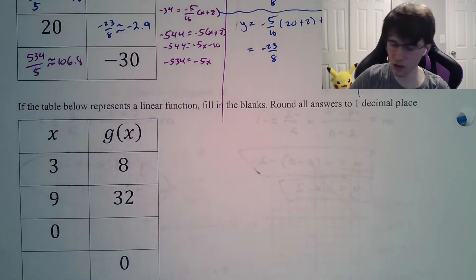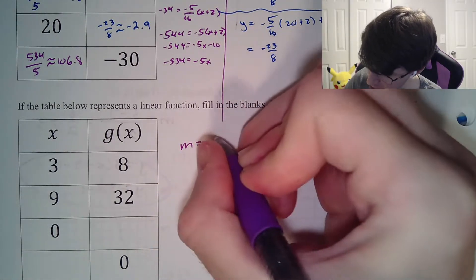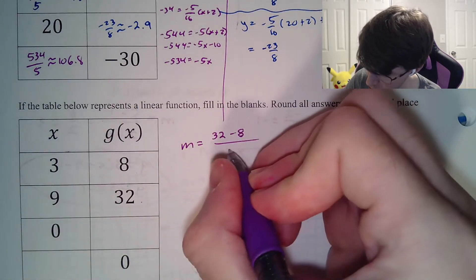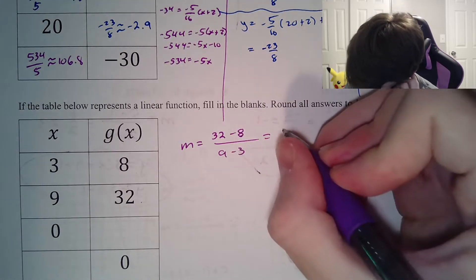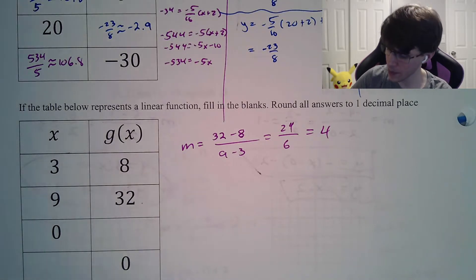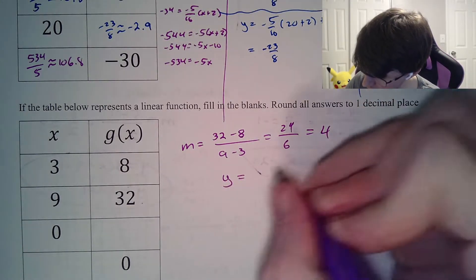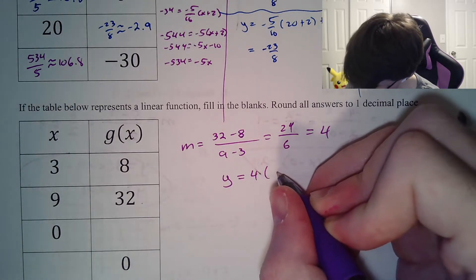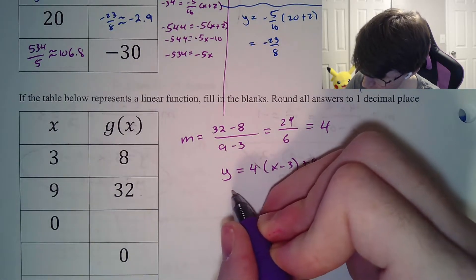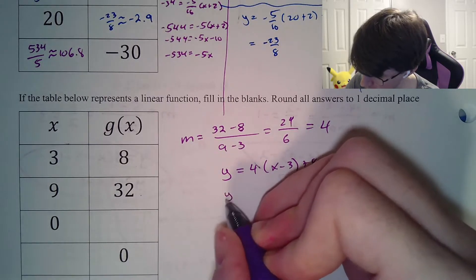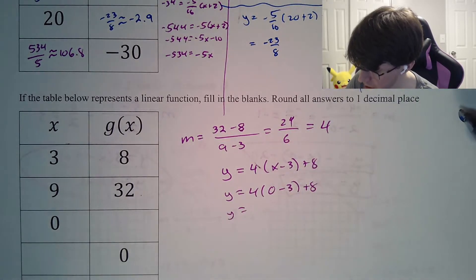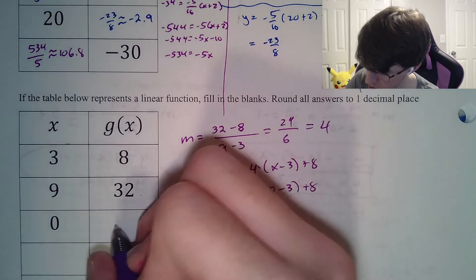If the table represents a linear function, again round to one decimal place. Our m equals y2 minus y1 over x2 minus x1: 32 minus 8 divided by 9 minus 3. That's 24 over 6, which is exactly 4. So y equals 4 times x minus 3, plus 8. Plugging in 0: f of 0 is 4 times 0 minus 3, plus 8 — that's negative 12 plus 8, which is negative 4.